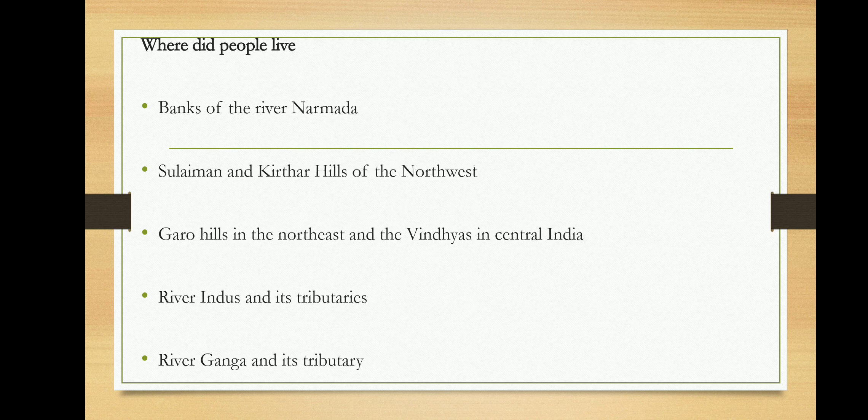Let us understand how people lived. People lived basically on the banks of the river Narmada, in the Sulaiman and Kirtar Hills in the northwest, the Garo Hills and the Vindhyas in central India, and along the Indus and the Ganga and their tributaries.